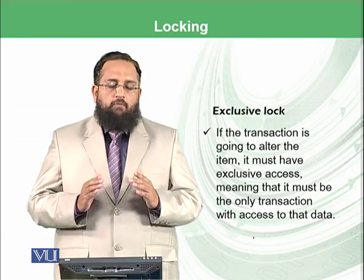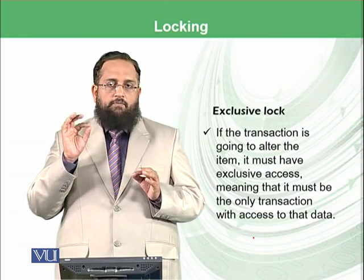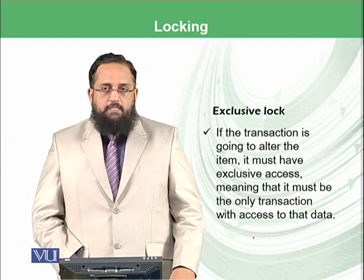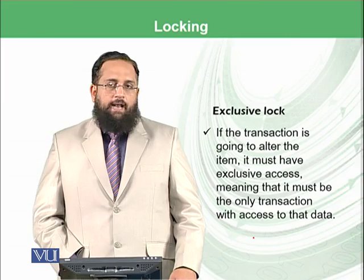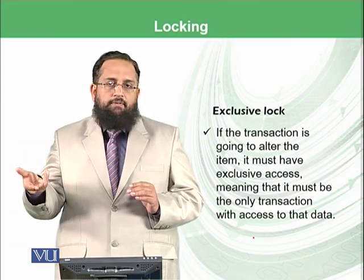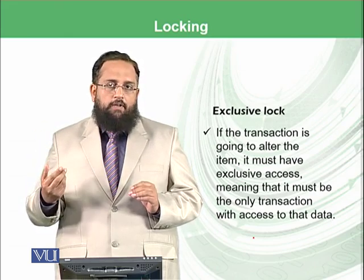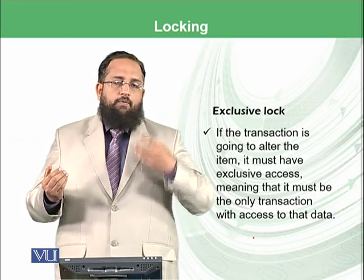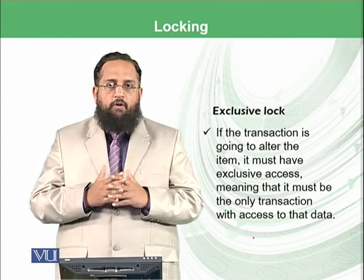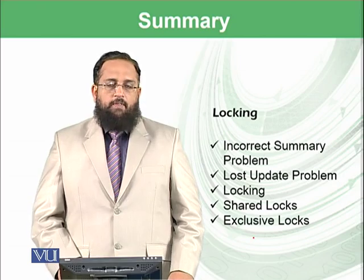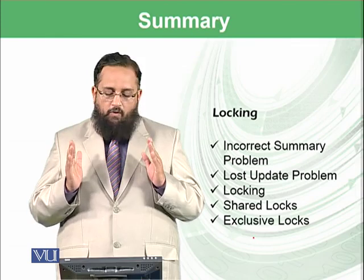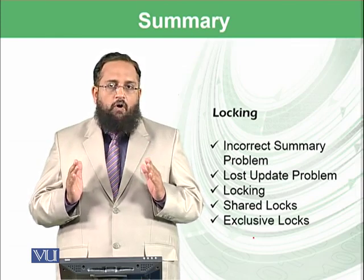The next kind of lock is the exclusive lock. If the transaction is going to alter the item — for example, the 1000 will be decremented or incremented — then no one is even allowed to view that data. It must have exclusive access, meaning it must be the only transaction with access to that data. Otherwise, other instructions viewing the old value of 1000 will not get the chance to know that 500 has been deducted, leading to inconsistency. So today we have learned about how database integrity can be maintained using locking, and we have discussed the incorrect summary problem, the lost update problem, and the two types of locks: shared locks and exclusive locks.